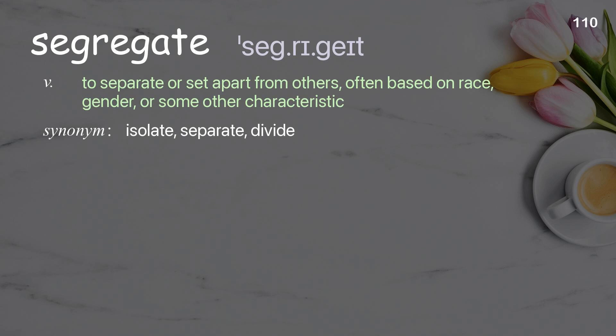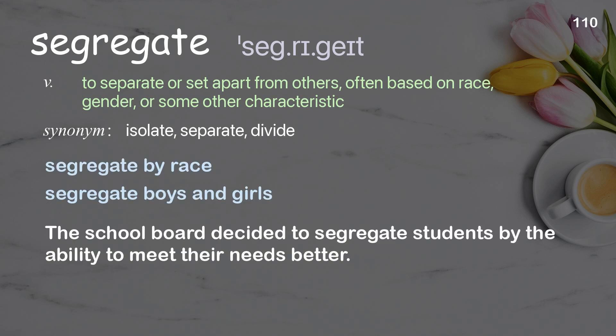Segregate: to separate or set apart from others, often based on race, gender, or some other characteristic. Examples: segregate by race, segregate boys and girls. The school board decided to segregate students by ability to meet their needs better.